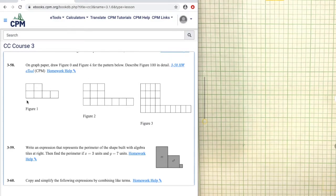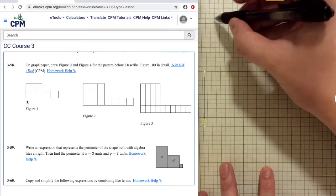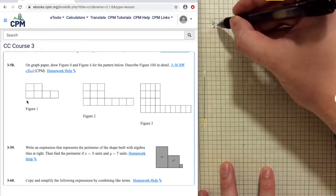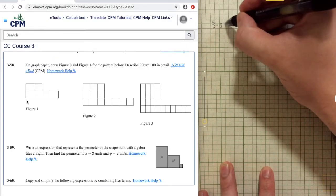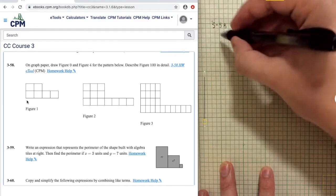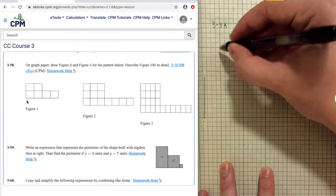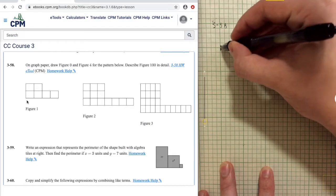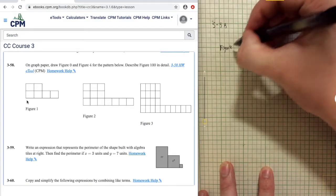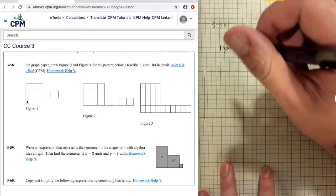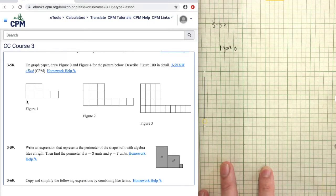So figure 0, let's write this down. This is problem 3-58. Going to draw figure 0. We would imagine that this square here would shrink by one. So just become a one by one tile.